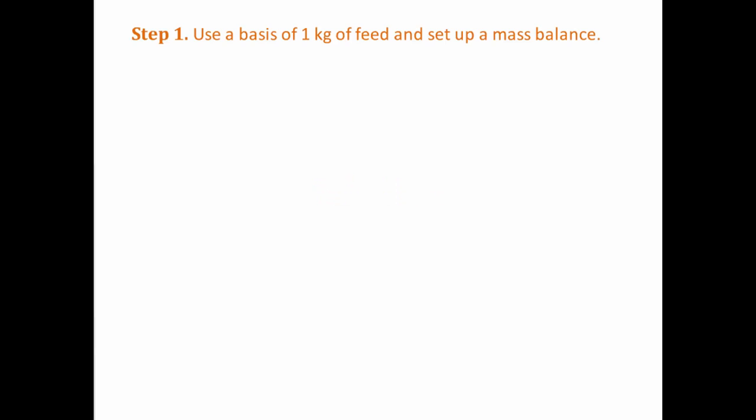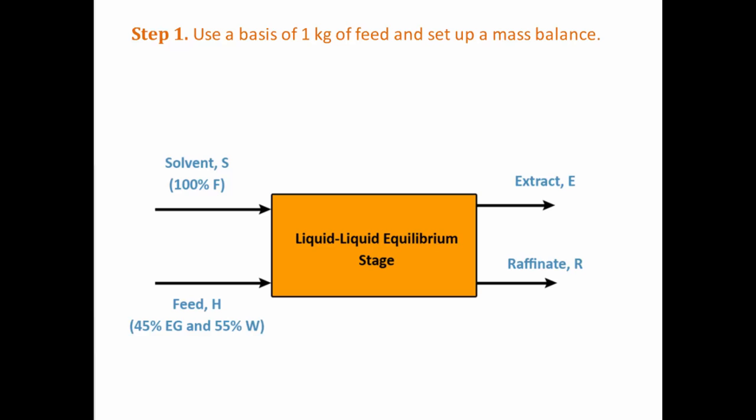First, draw a diagram to show what's going on. We're told that the system has two inputs, the 45% ethylene glycol and 55% water solution.